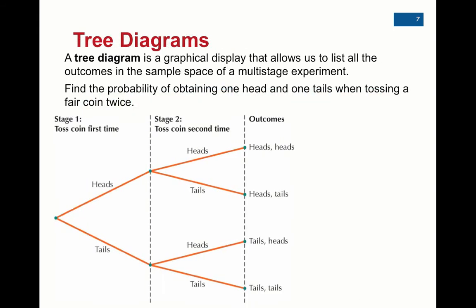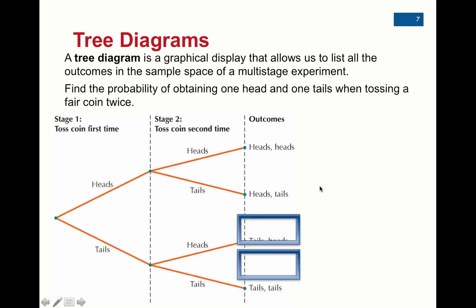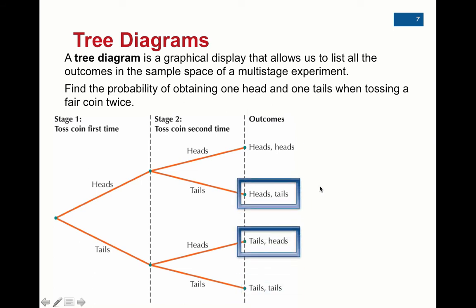Another way to approach multiple experiments in a row is with a tree diagram. For example, if you flip two coins and want the probability of getting one head and one tail: when you flip two coins there are four different outcomes — two outcomes on the first flip times two outcomes on the second flip. The probability of getting one head and one tail is two out of four. This is also theoretical; we're not actually conducting the experiment. That's another name for classical probability.